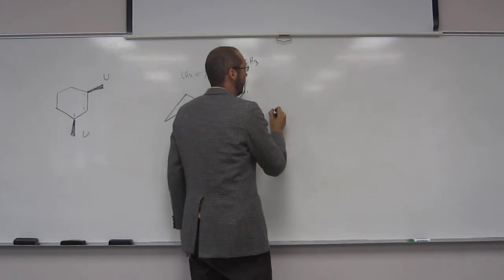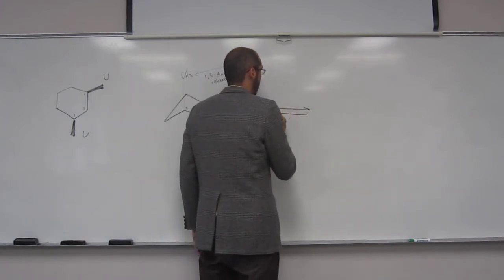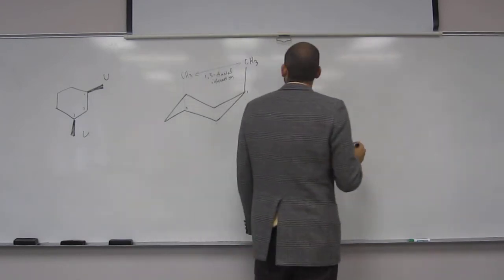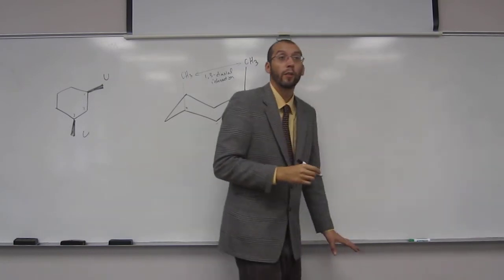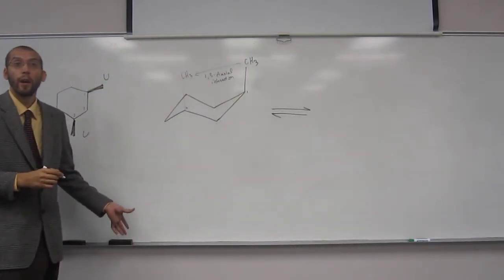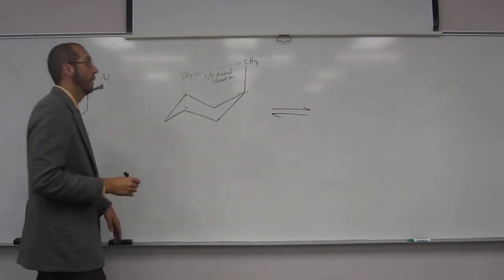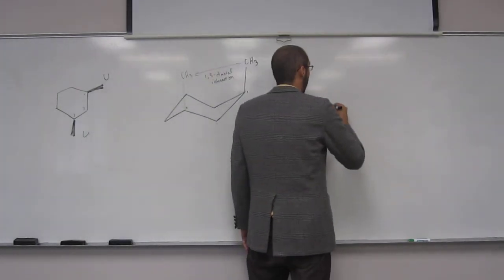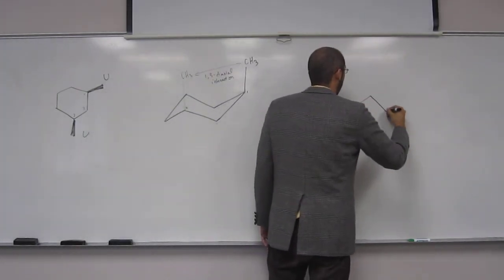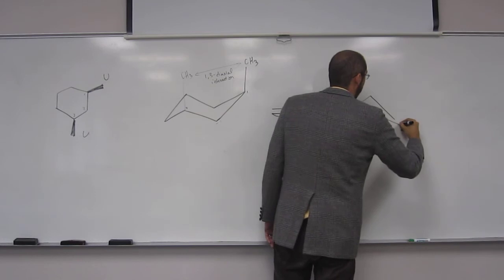So what's going to happen when we ring flip? Yeah, so they go from axial to what? Equatorial. What do they do? Do they go from up to down? No. So they stay up but they go from axial to equatorial.